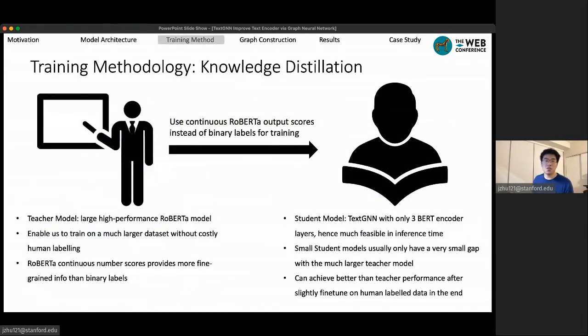As you can imagine, the training of the model can be challenging and data-hungry. And at the same time, to productionize the model, it needs to be efficient. Hence, we use the knowledge distillation method where we have a large-scale, high-performance BERT model as a teacher model to automatically label a large number of examples with a continuous output score instead of binary labels.